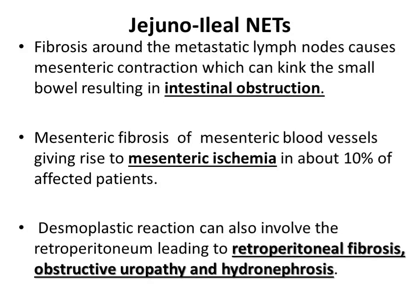Sometimes patients with jejunoileal NETs present with intestinal obstruction or mesenteric ischemia. Fibrosis surrounding the metastatic lymph nodes leads to mesenteric contraction, causing kinking of the small bowel and subsequently intestinal obstruction. Similarly, mesenteric fibrosis of mesenteric blood vessels gives rise to mesenteric ischemia in about 10% of affected patients. Because of the desmoplastic reaction, patients may also develop retroperitoneal fibrosis, obstructive uropathy, and hydronephrosis.